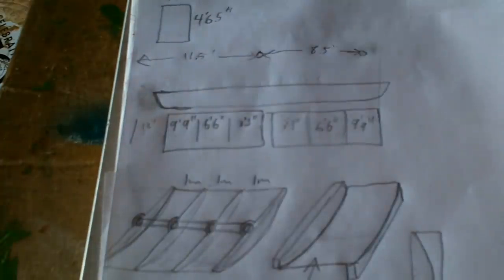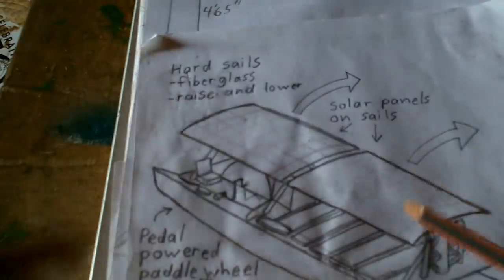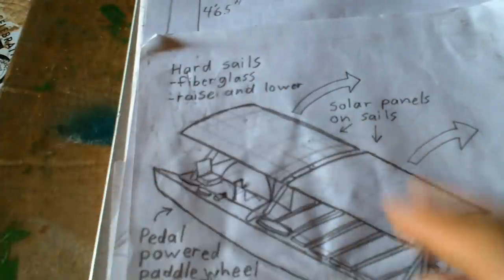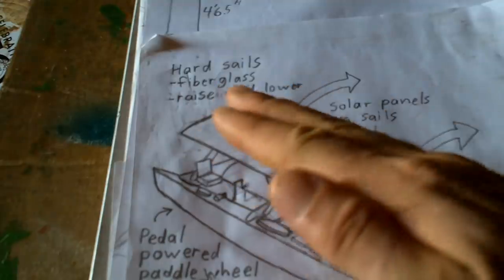All right, now this piece here that attaches to the sail part to tilt it, I want to make sure it's not in the way so much that these can't tilt when they're down, because I want to be able to aim these toward the sun.